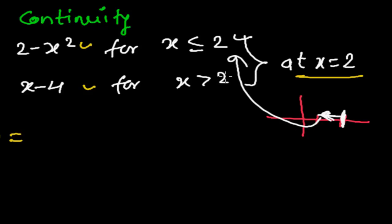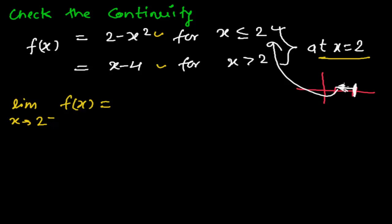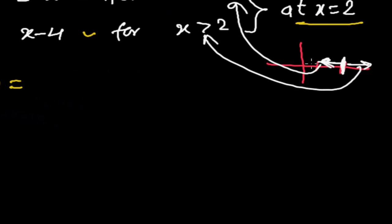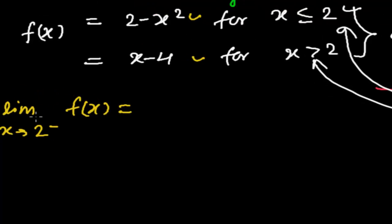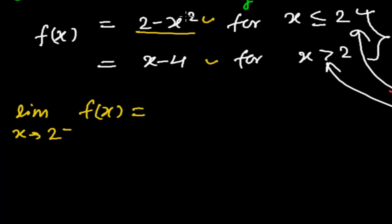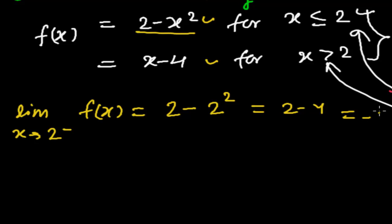The other piece, x minus 4, applies for all values greater than 2. So for the left-hand limit we use 2 minus x squared: substituting x equals 2 gives 2 minus 2 squared, which is 2 minus 4, that is minus 2. So the left-hand limit is minus 2.